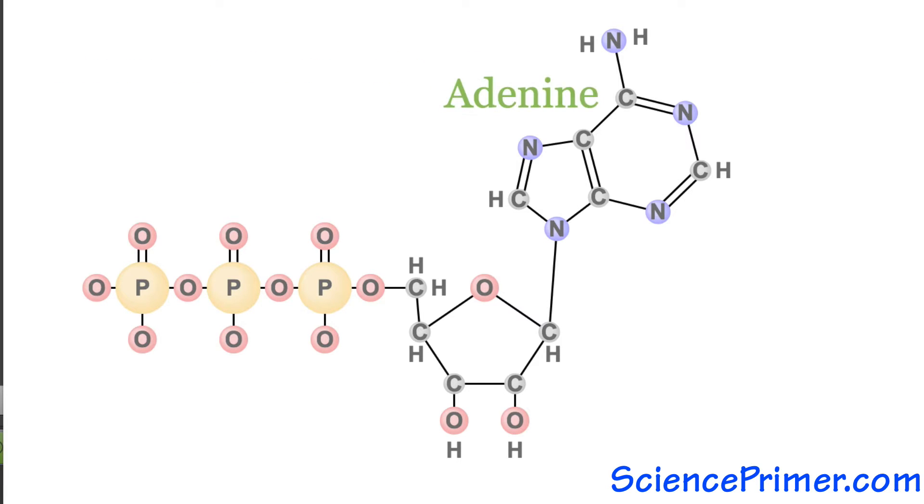ATP is the purine-based adenine bound to a ribose sugar with three phosphate molecules bound to the three prime carbon of the ribose sugar.